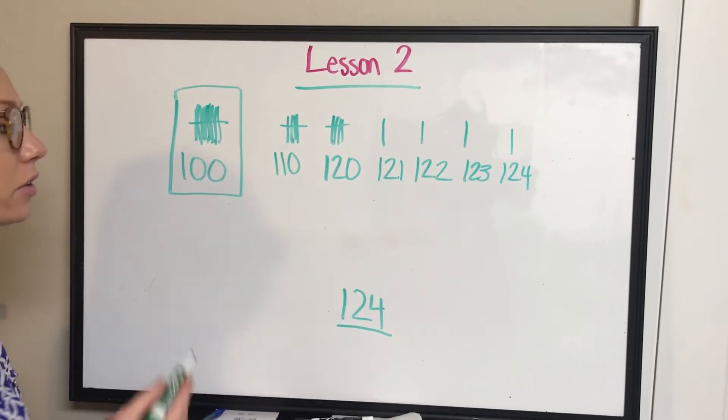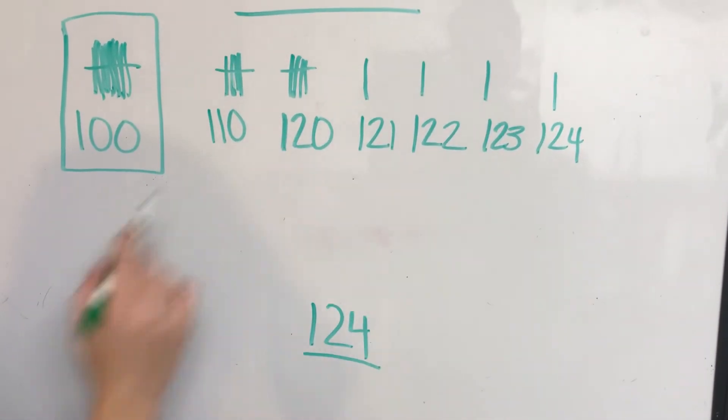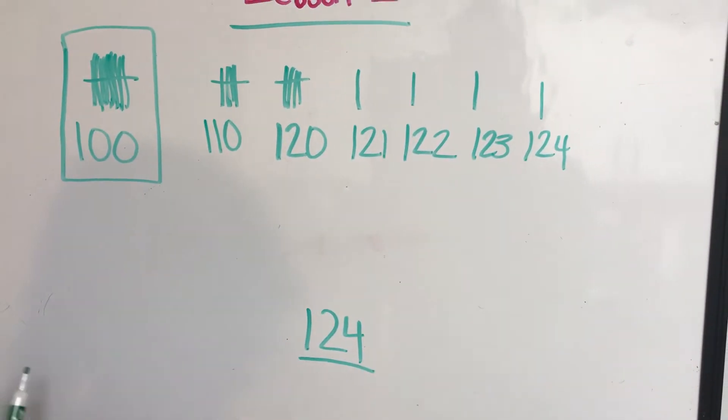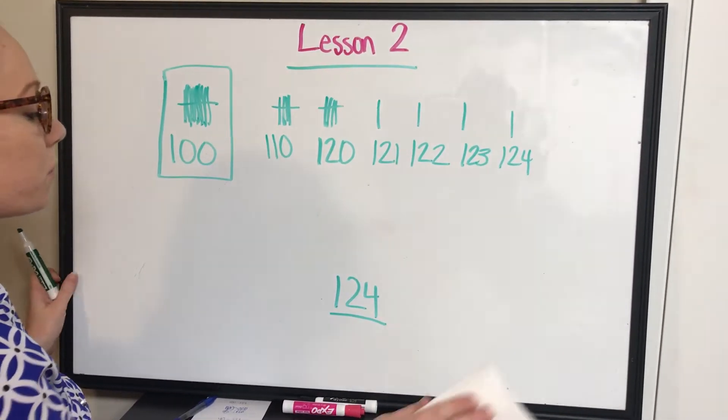That is exactly how this problem would look if I said, draw label and box 100. And then draw your pictures to count up to 124. Now let's try a new one. If you want to pause right here and write it on your paper, you're more than welcome to.